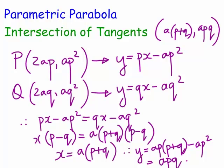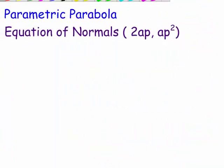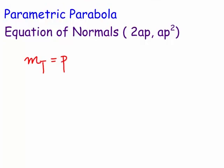Now let's find the equation of the normals. We already know the slope of the tangent at (2ap, ap²) is p, so the slope of the normal must be the negative reciprocal, which is −1/p. This is because the tangent and normal are perpendicular, meaning m₁ × m₂ = −1.